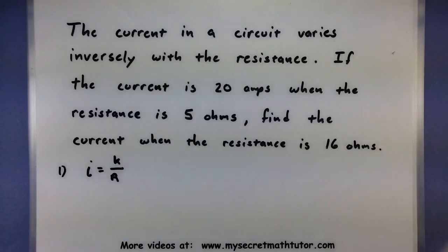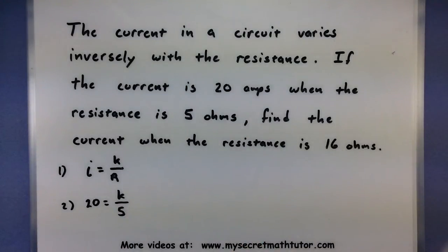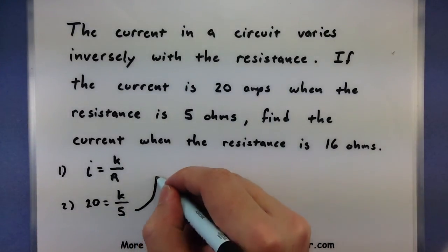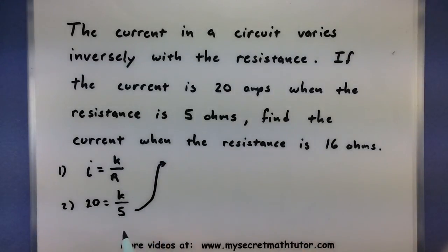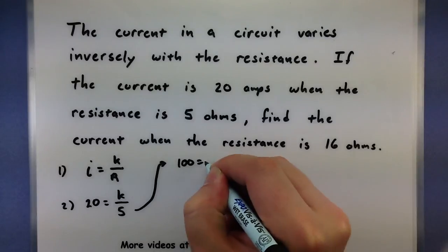Now if the current is 20 amps when the resistance is 5 ohms, that's that little bit of information we'll use to actually figure out the k. So the current is 20, and the resistance is 5. Notice how we can now solve for our k value by multiplying both sides by 5. So 100 equals k.